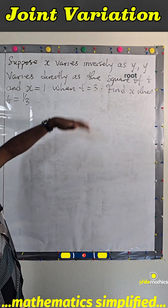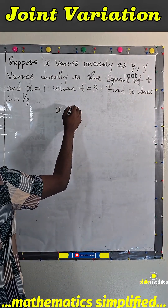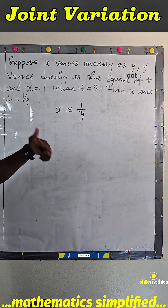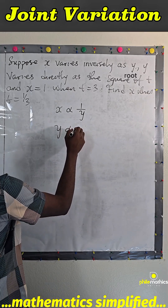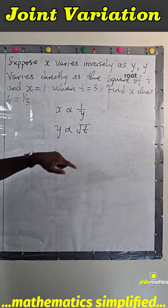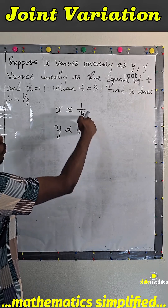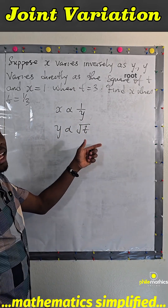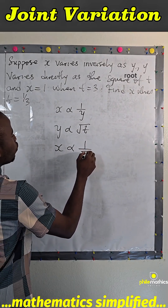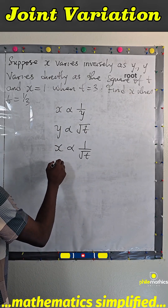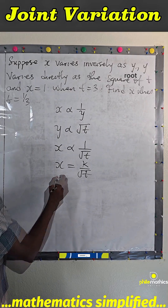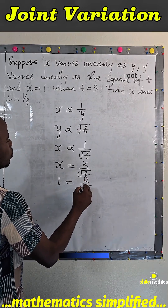Suppose x varies inversely as y, and y varies directly as the square root of t, and x is 1 when t is 3. We can substitute the square root of t for y, since y varies directly as root t, so that x varies inversely as the square root of t. Introducing the constant of proportionality, x equals k over root t.